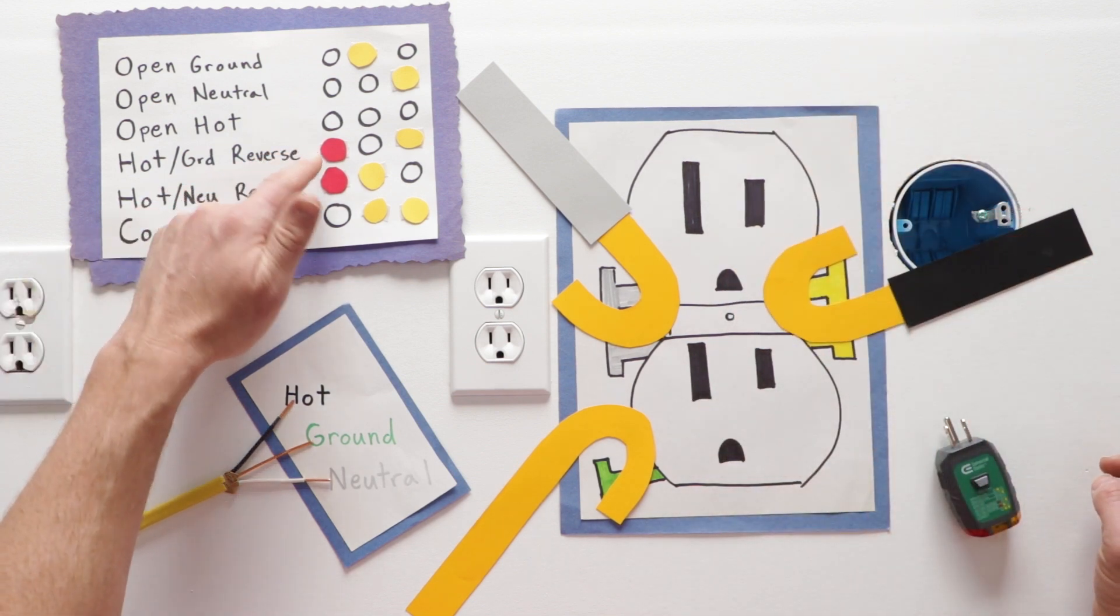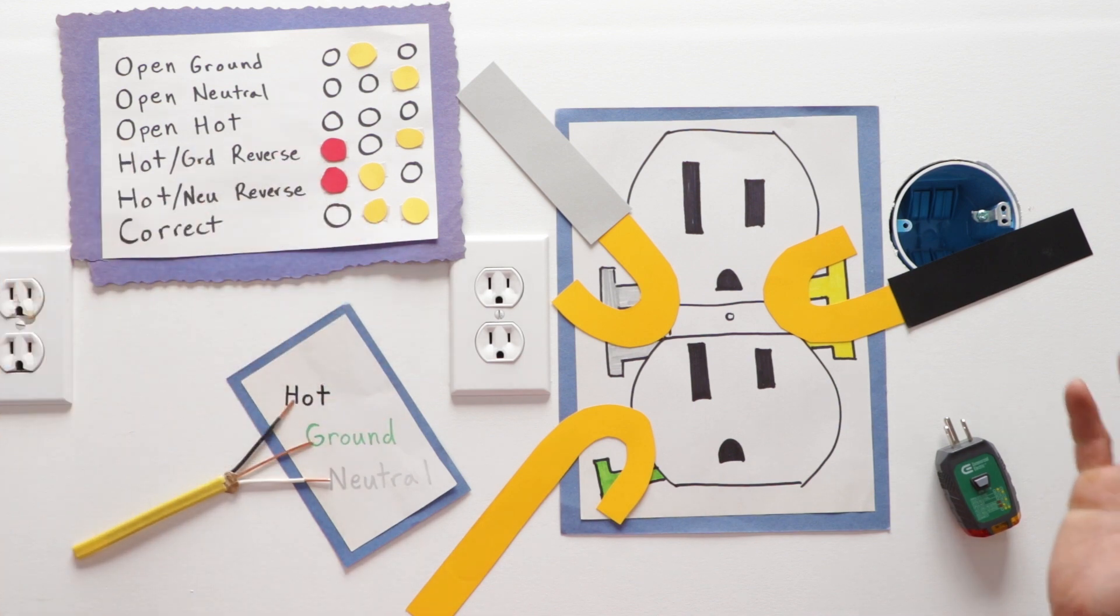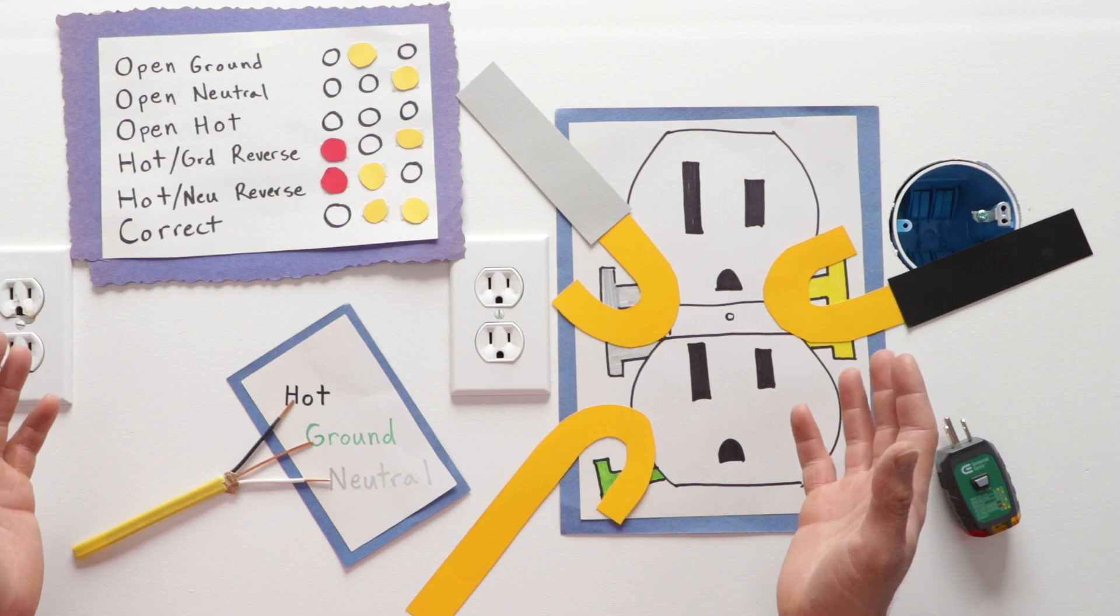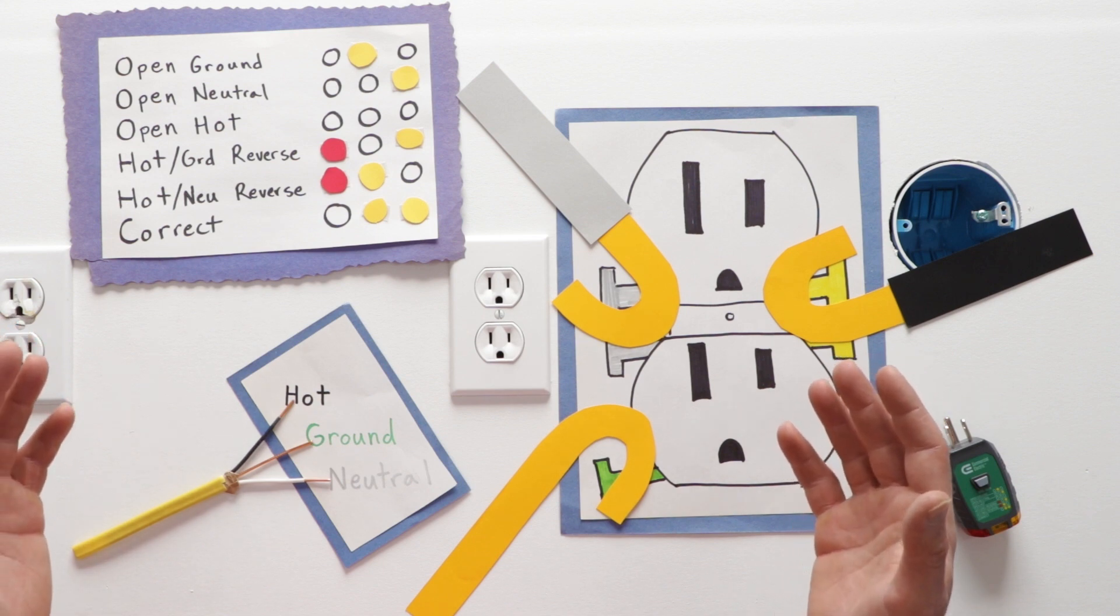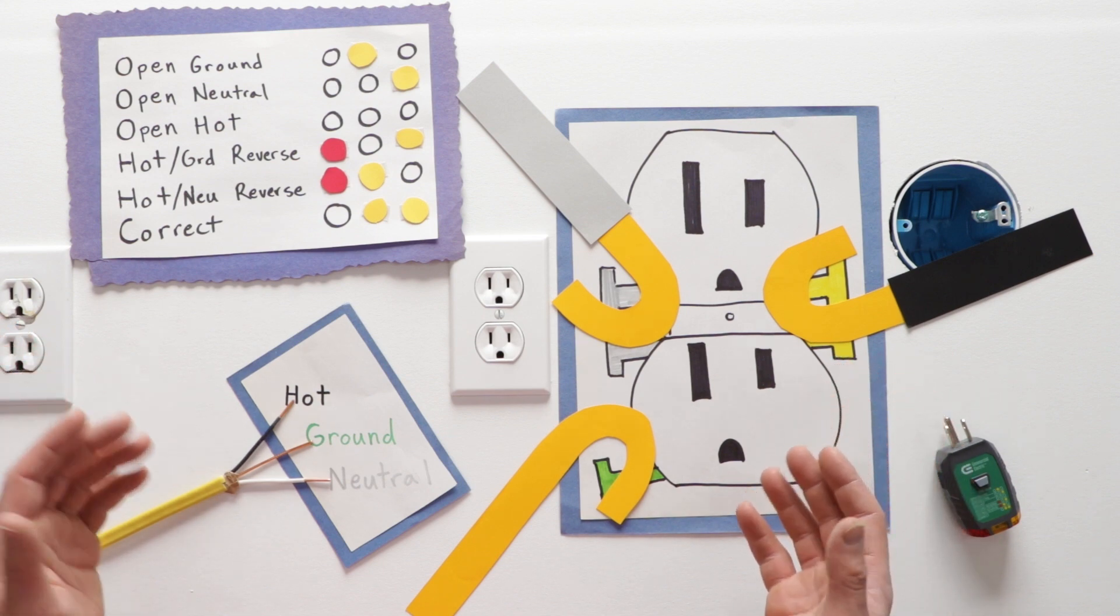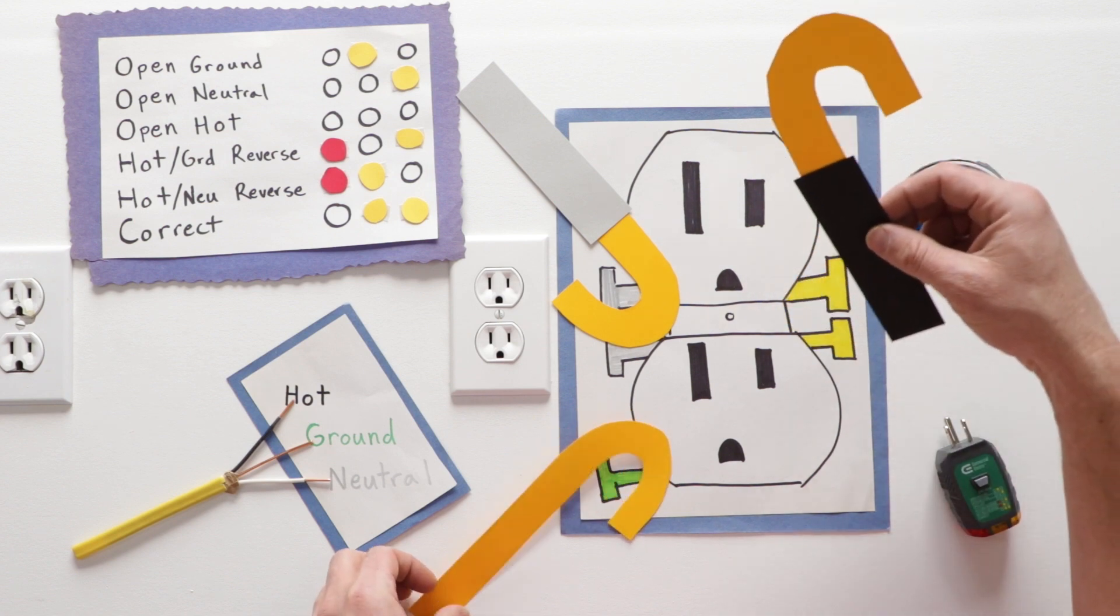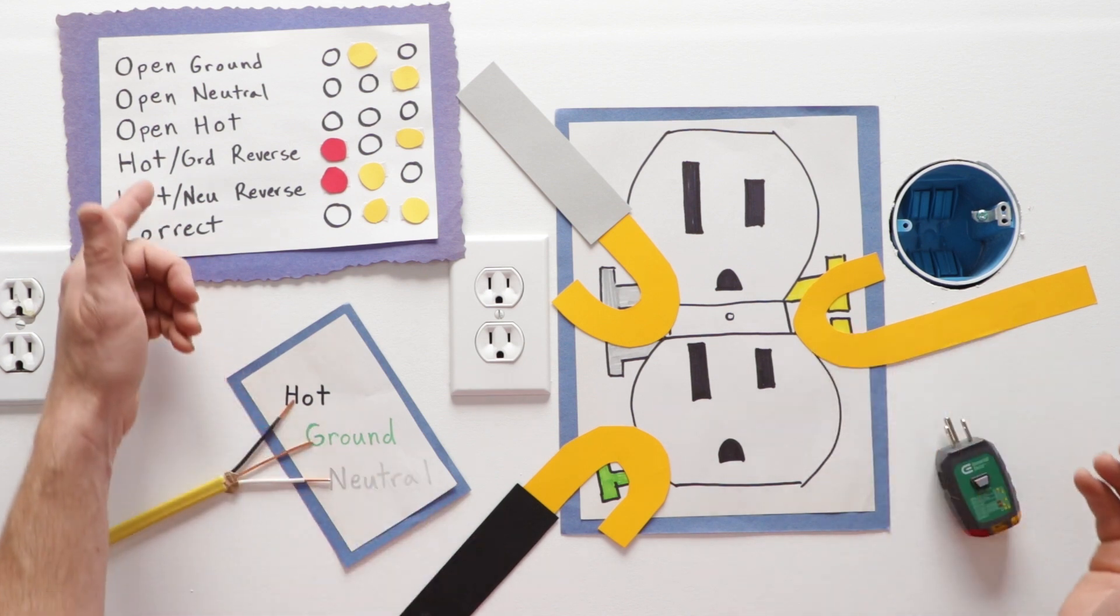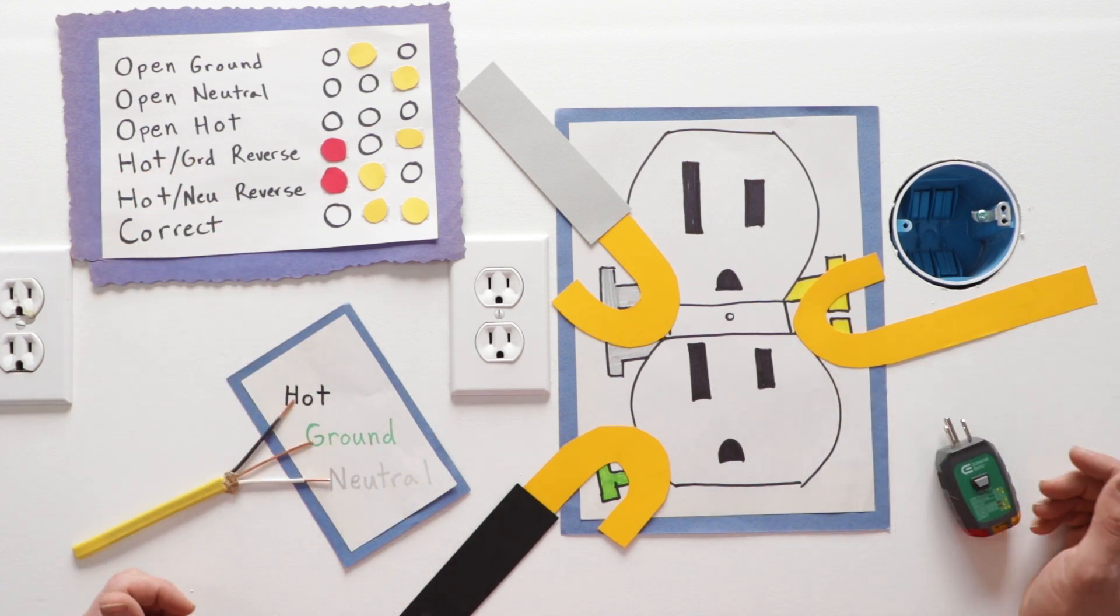The next two arrangements have a red. Red really indicates dangerous. This is a very hazardous situation, especially if you plug in appliances. Say you have your hot and your ground reversed. This is our first situation. This is really bad.